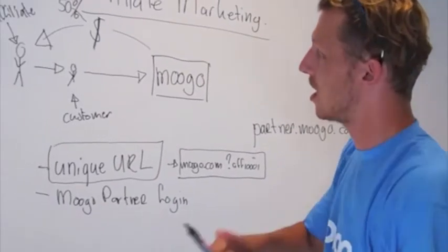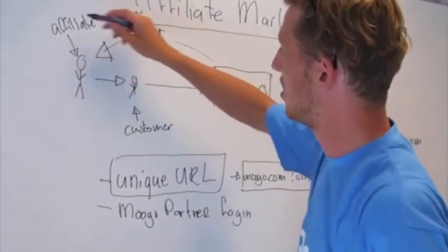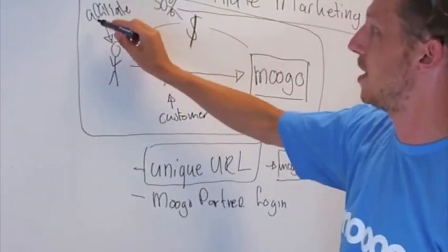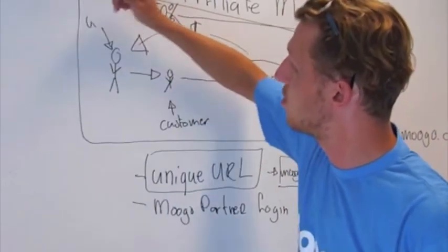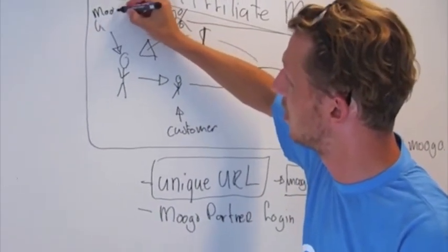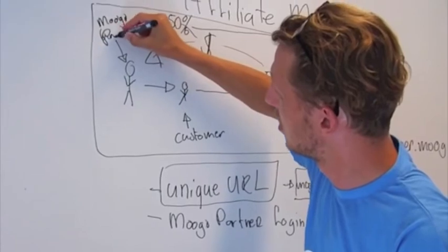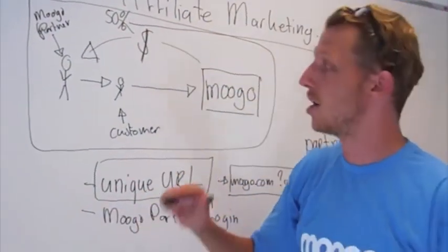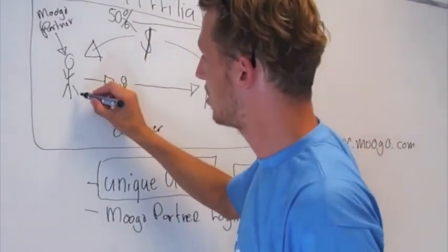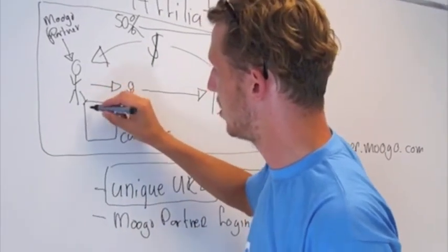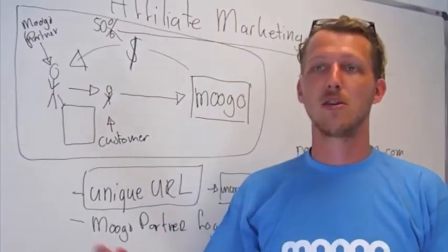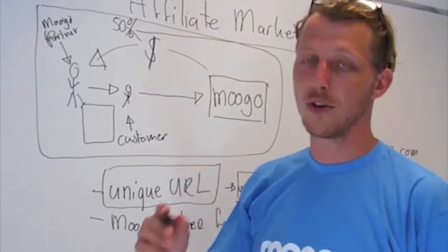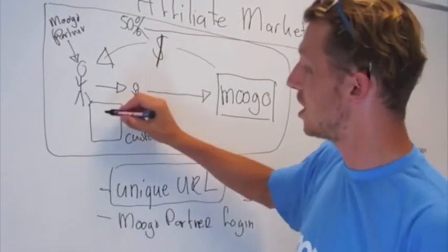Every time you bring in a customer, so let's go back to this original drawing. You are now the affiliate or let's call you the Mugro Partner. You will be sending, for example, you have a blog. On your blog you post, this is your blog here, you will post something about why you think people should use Mugro. Then as the link to refer to Mugro, you use your unique URL.